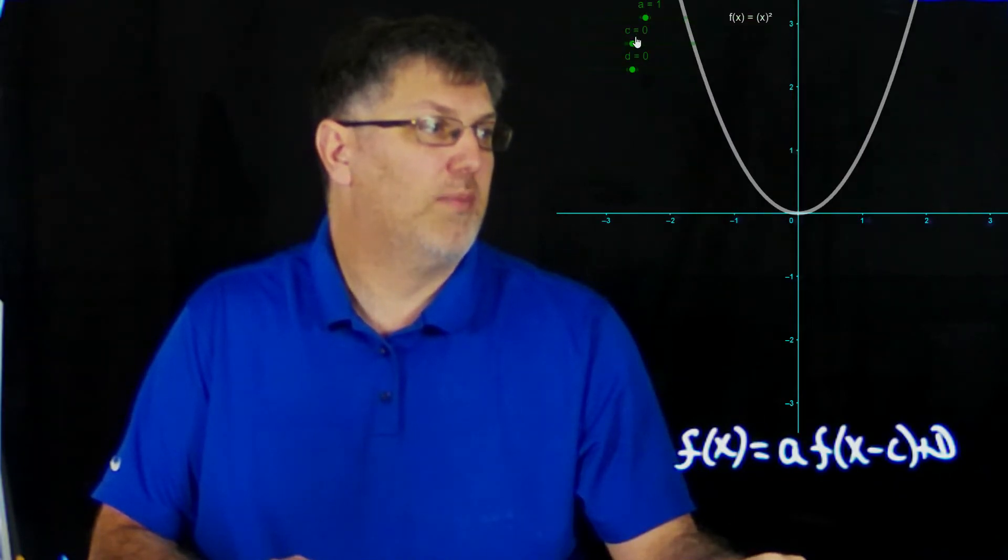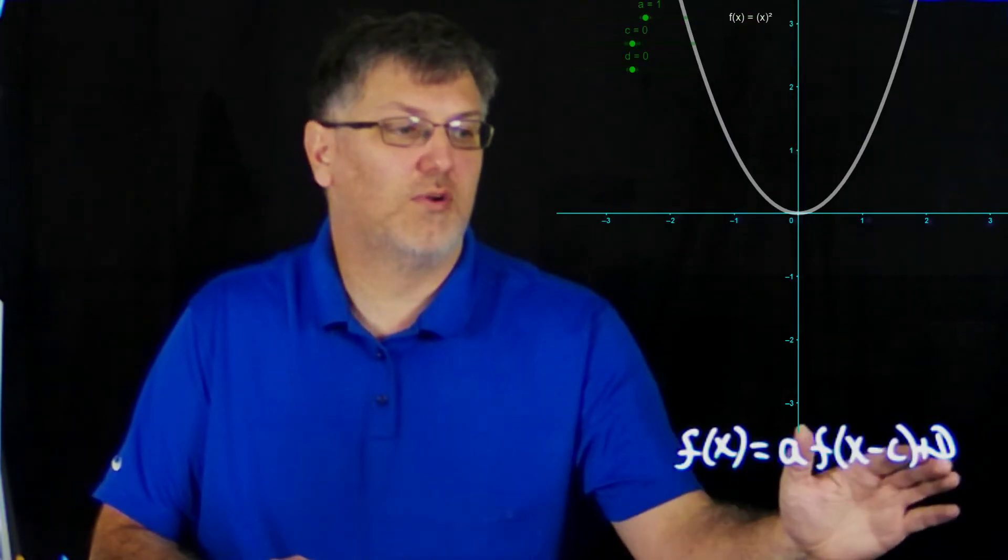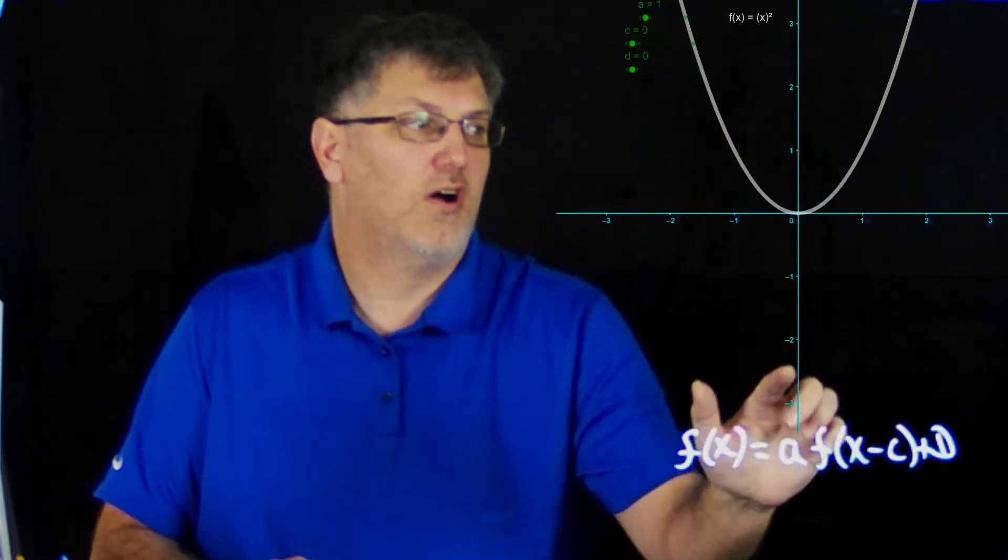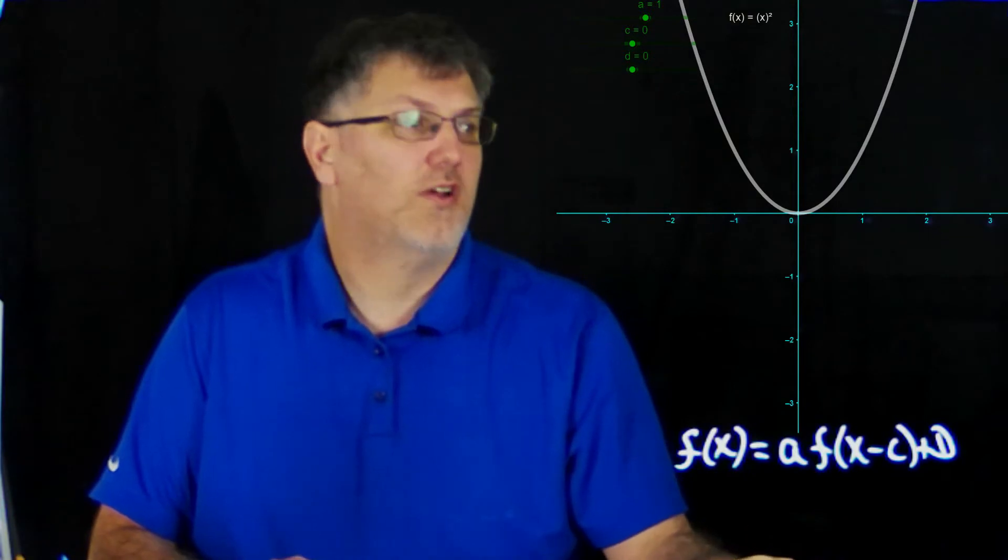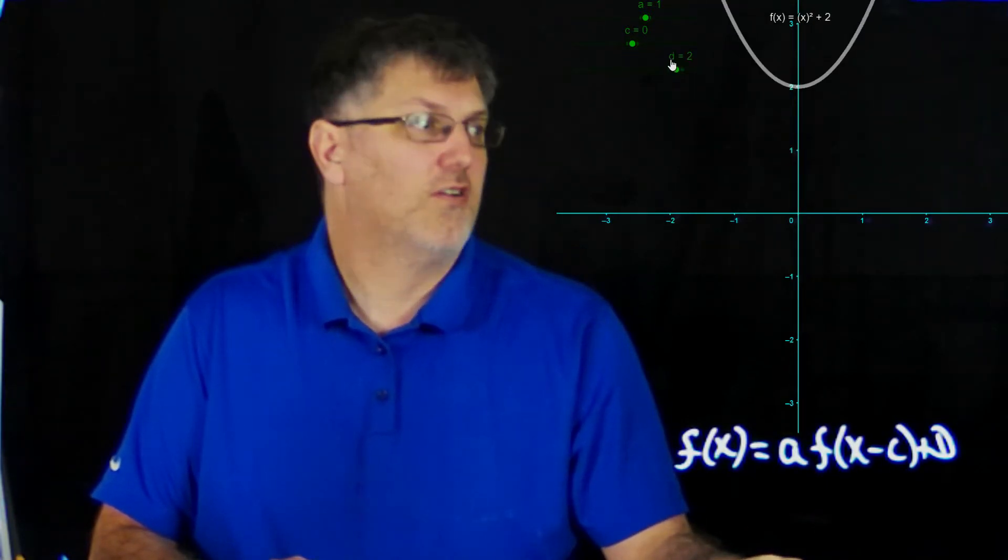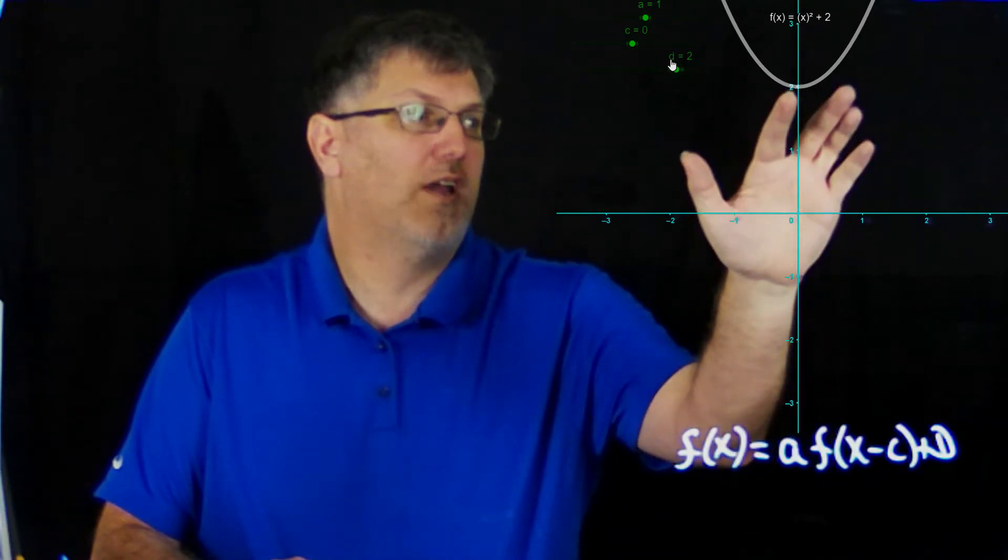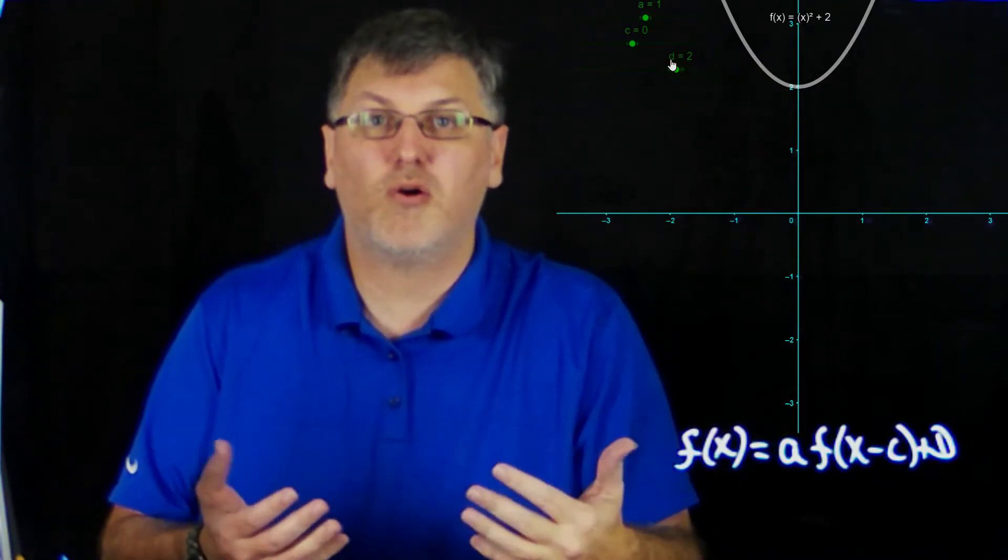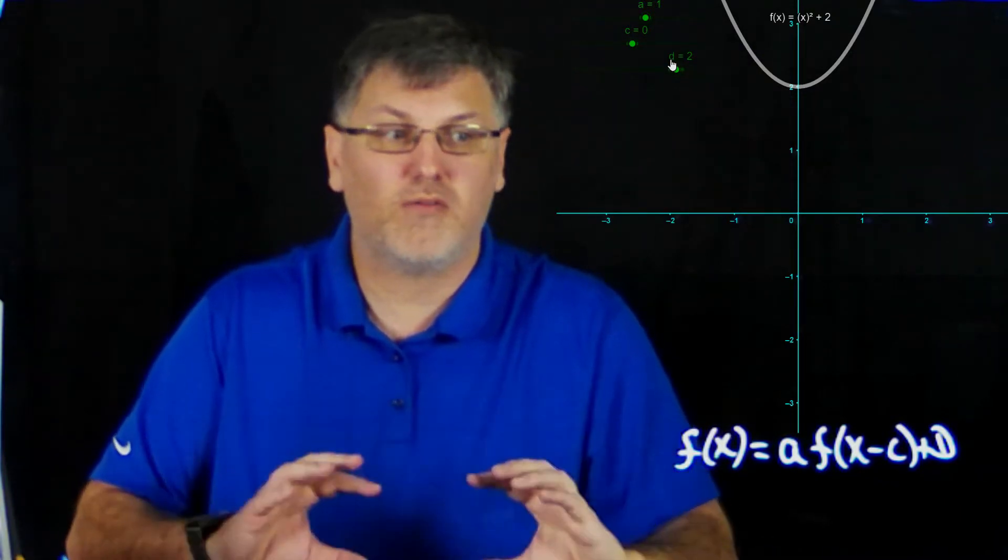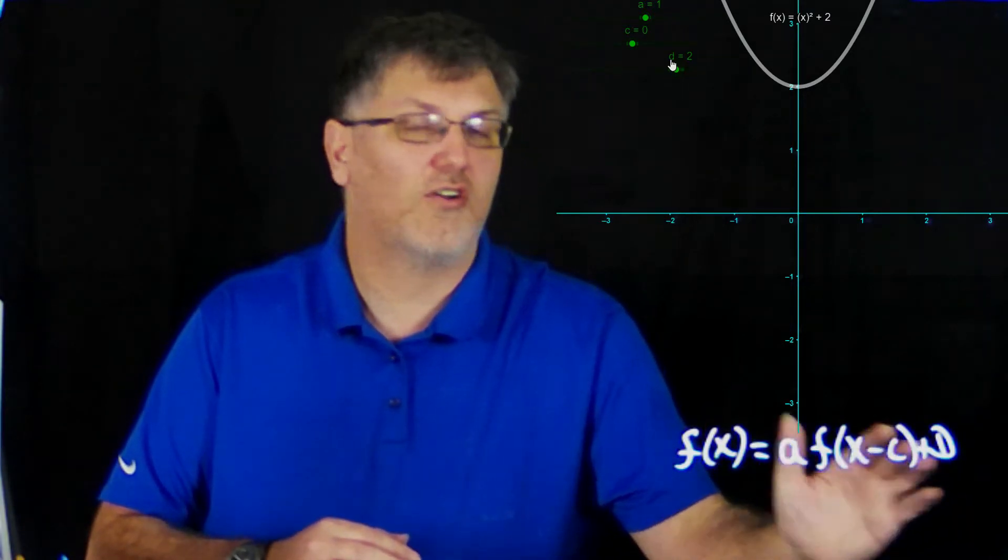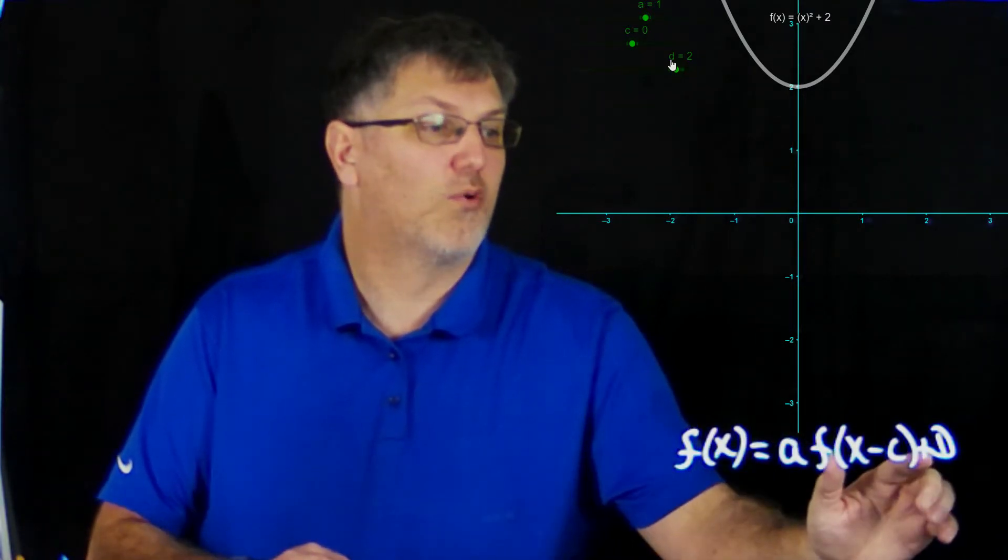Let's set our c back to 0 and look at what d does. d, if you remember from last semester, should move it up and down, up and down the y-axis. As I move my d, as I move it up, so I moved it up two units, it still kept its shape as a parabola. It didn't go any narrower. It didn't flip around or anything along those lines. So really, our c and our d are translations. d, if it's positive, moves up. If it is negative, it moves down.